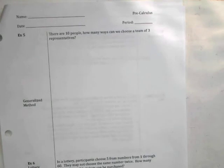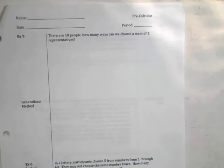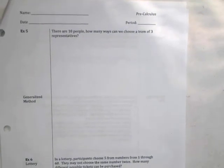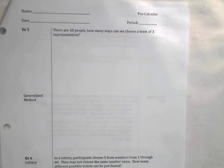Hello Precalculus students and welcome to our continuing series of videos on how to deal with combinatorics, in other words how to count. I have a question that says there are 10 people, how many ways can we choose a team of three representatives?